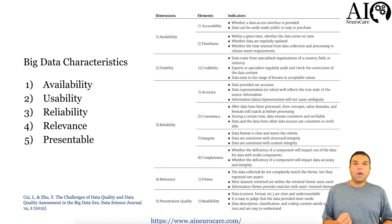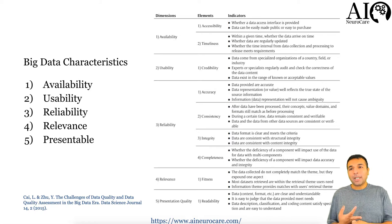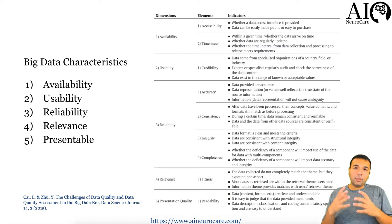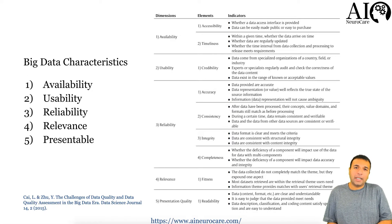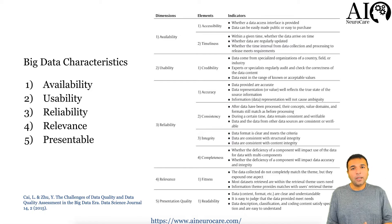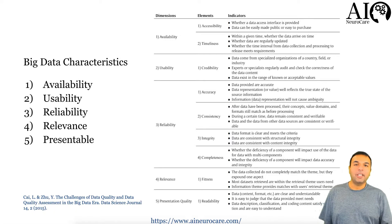Big data has to have certain characteristics. Number one is availability — it should be accessible and in a timely fashion. It has to be usable, meaning there's enough credibility and accuracy, and it's devoid of redundancies. It has to be reliable — the data format must be clear and consistent. It has to be relevant: if the data you're getting is about pulmonary function tests and you're looking at a patient with cardiac STEMIs, it's useless. And most importantly, it should be presentable in a way that can actually make wisdom out of it.